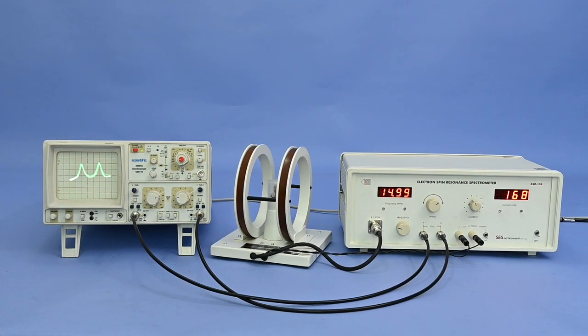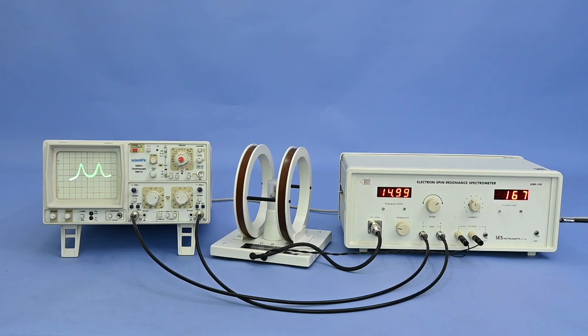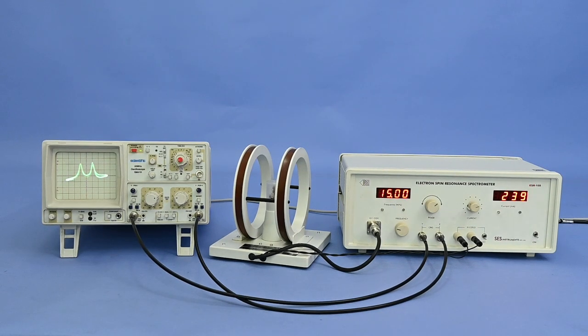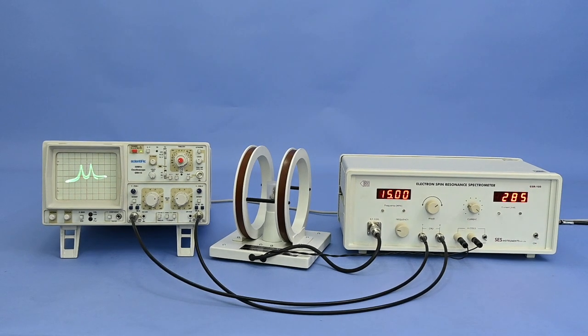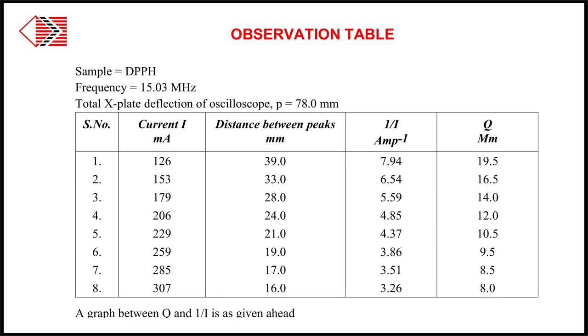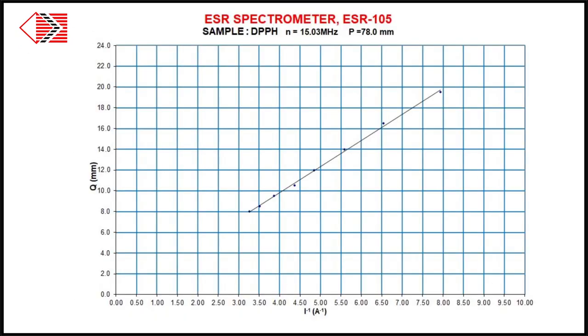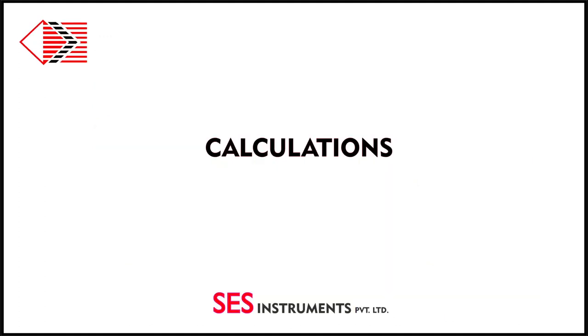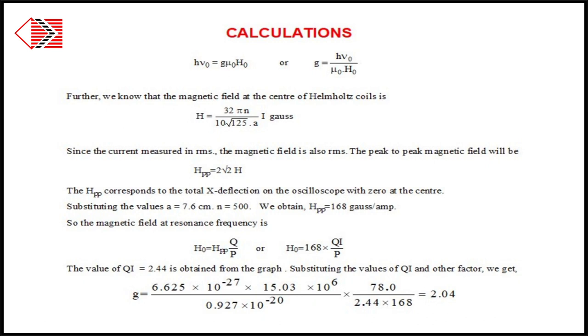Repeat the process again and tabulate the set of readings and plot a graph. The equation of Lande G factor is as shown here. The details of this equation and its calculation are given in user's manual. Substituting the value of QI as obtained from graph gives value of G as 2.04.